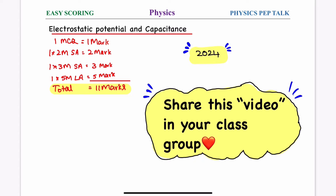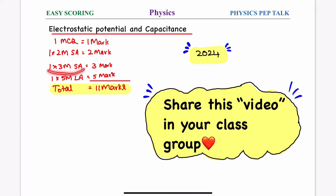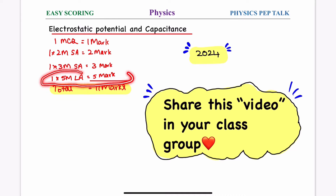For each chapter, there is one MCQ question worth one mark, one two-mark short answer, one three-mark short answer, and one five-mark long answer.